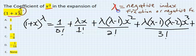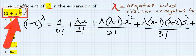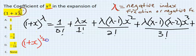Per lambda is negative index or fraction or negative fraction. So let's solve this 1 plus x to the power of half.